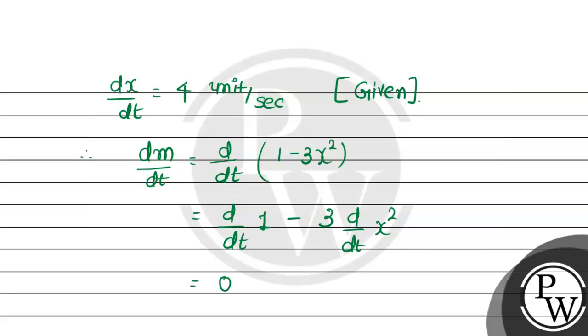This is 0 for constant, minus. General rule is that constant becomes 0. And second is d by dx, x raised to n, then n comes forward x raised to n minus 1,